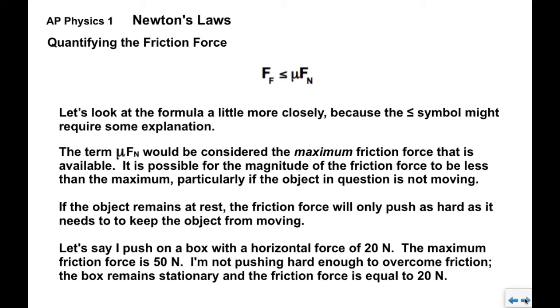But let's say we have a box sitting on the floor, and I'm going to push on it sideways with a horizontal applied force of 20 newtons. Let's say for the sake of argument that mu times FN, or the maximum friction force, is 50 newtons. If I'm only pushing with 20, that's not going to be enough force to overcome the maximum friction force. So the box is going to remain stationary, it's not going to move. And the friction force is going to be equal to my 20 newton applied force to keep the box from moving. So the friction is going to balance out my applied force because I'm not pushing hard enough to overcome friction.